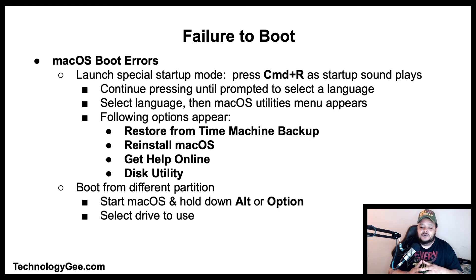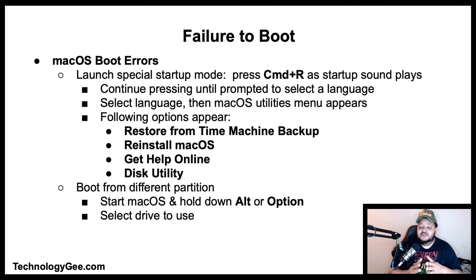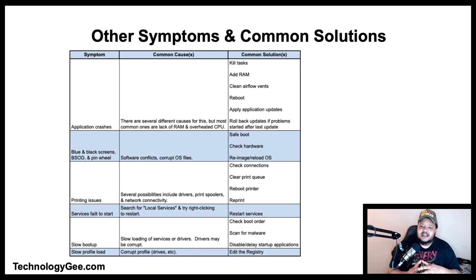To boot from a different partition than usual, such as a Boot Camp partition, start up your Mac and hold down the Alt or Option key until a list of bootable drives appears, then select the drive you wish to use.